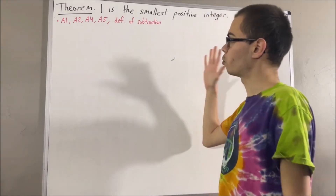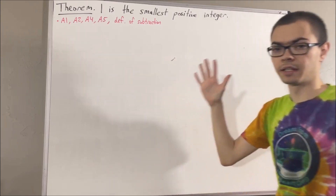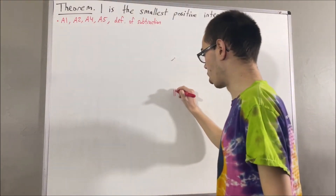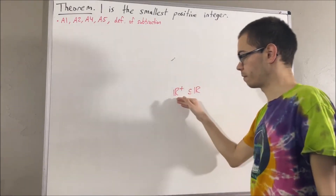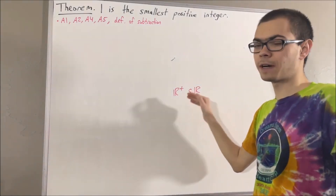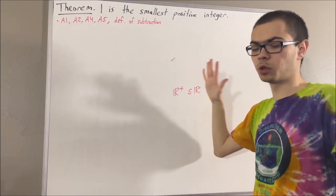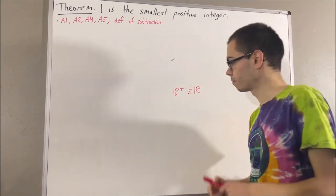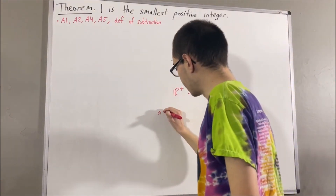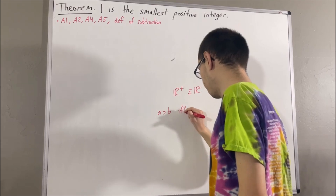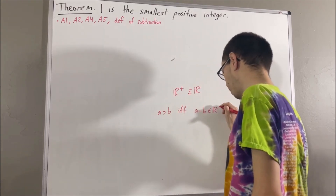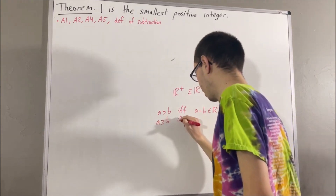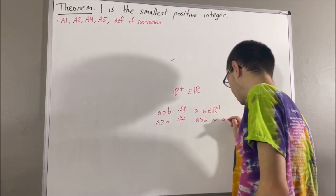Our real number system is equipped with a subset called the set of positive real numbers, denoted R-plus. Using the set of positive real numbers we define the greater-than relation and the greater-than-or-equal-to relation as follows. Given any two real numbers a and b, we say a is greater than b if a minus b is a positive real number, and a is greater than or equal to b if a is greater than b or a is equal to b.